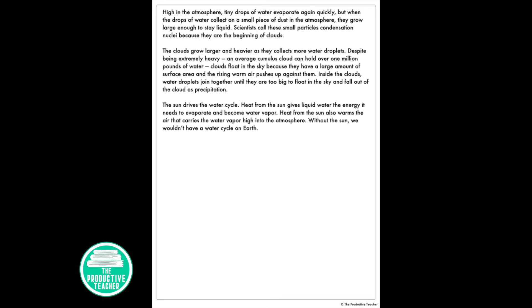Scientists call these small pieces condensation nuclei because they are the beginning of clouds. The clouds grow larger and heavier as they collect more water droplets. Despite being extremely heavy, an average cumulus cloud can hold over one million pounds of water. Clouds float in the sky because they have a large amount of surface area and the rising warm air pushes up against them. Inside the clouds, water droplets join together until they are too big to float in the sky and fall out of the cloud as precipitation.